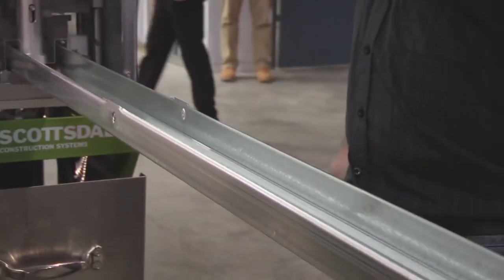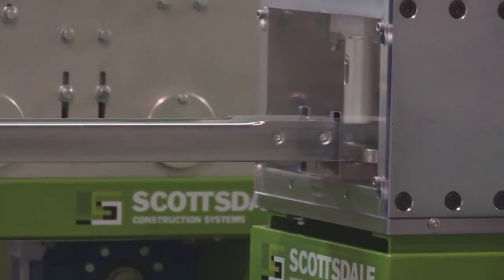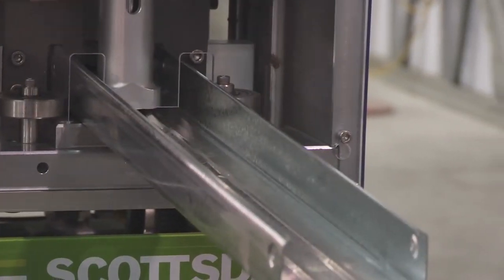The roll former does all the cutting, punching, notching, swaging and measuring of members to millimeter accuracy.